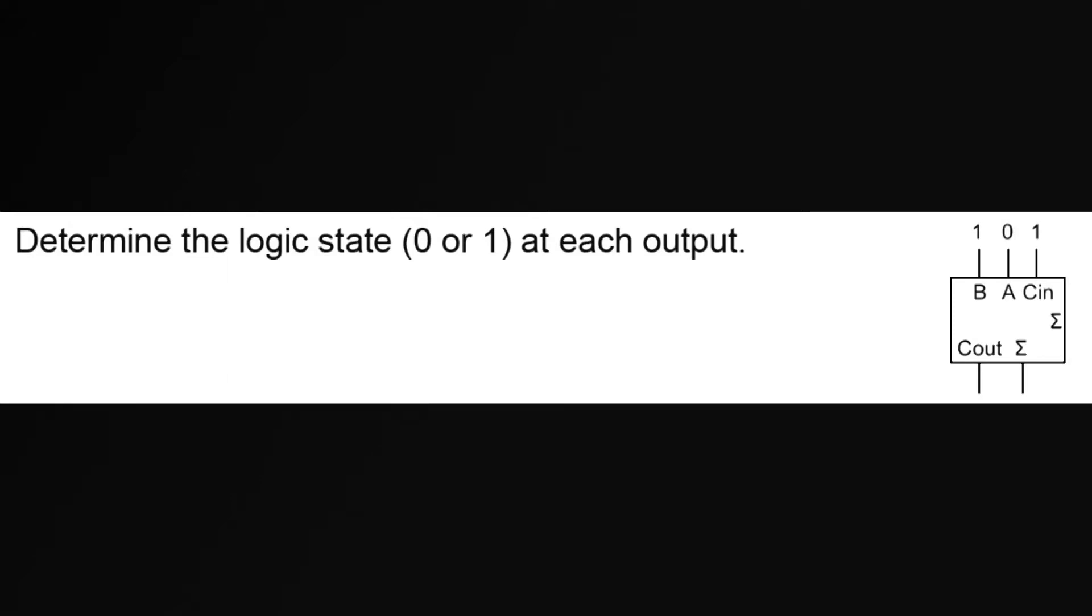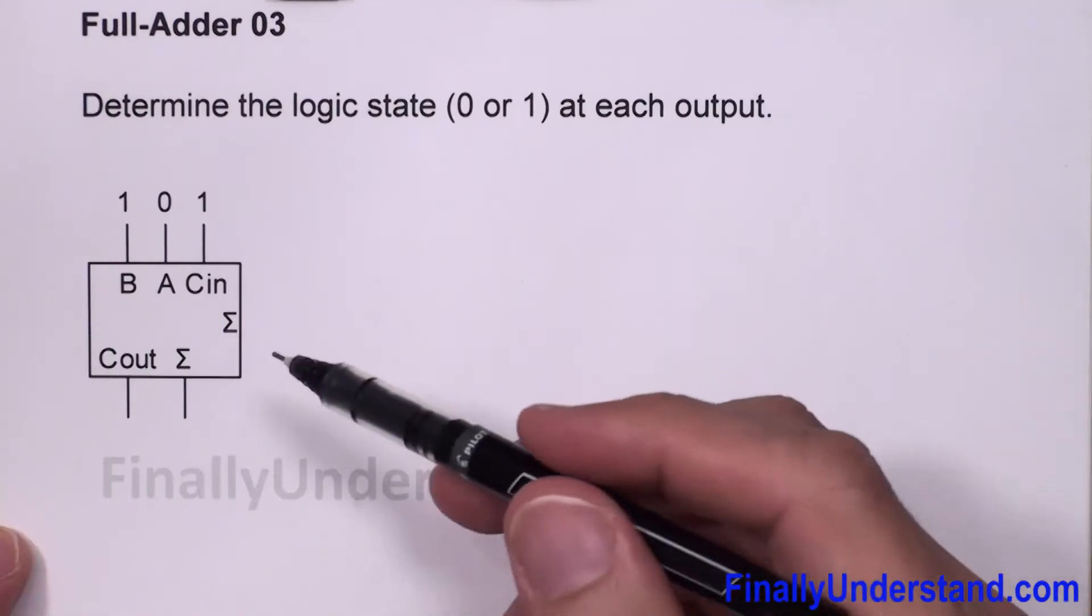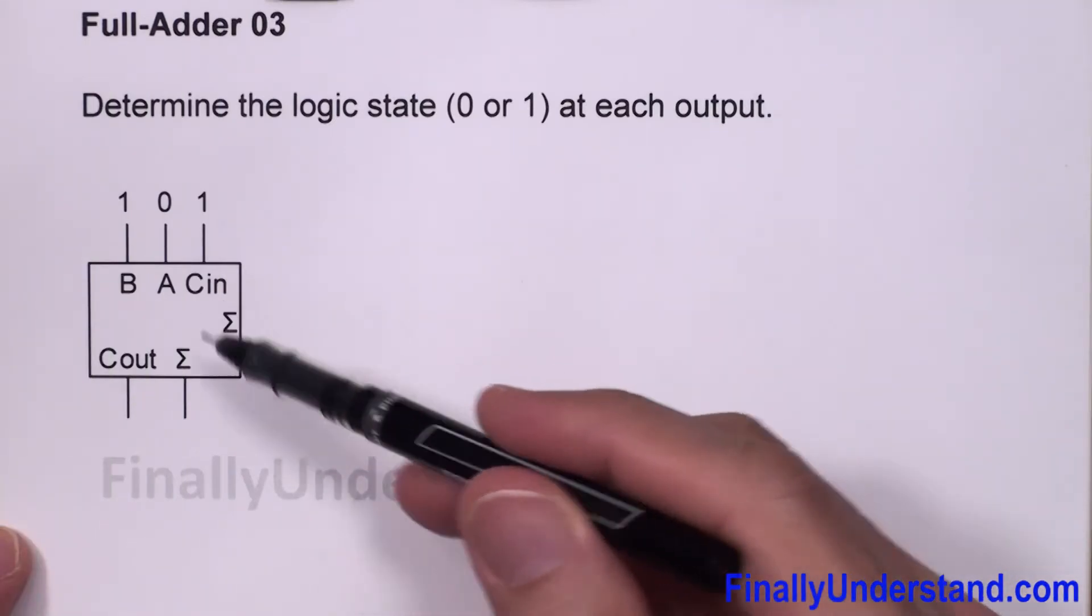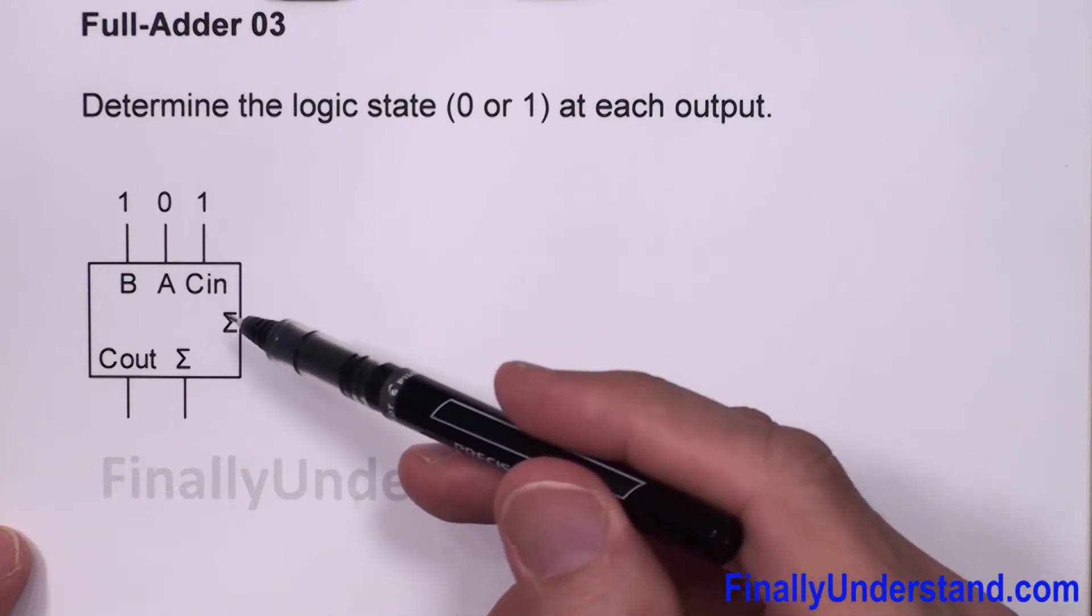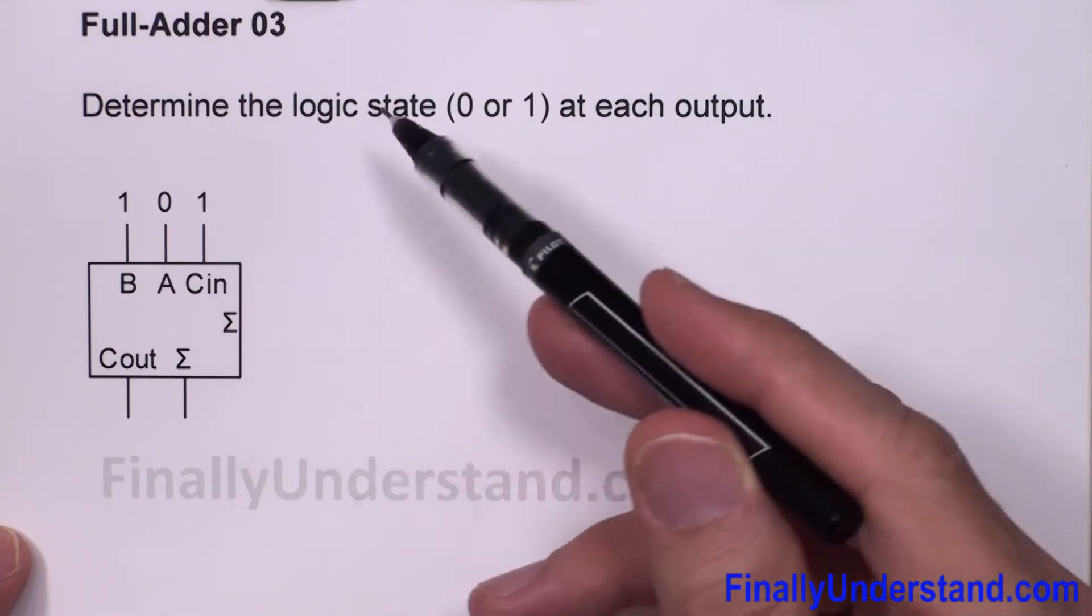Let's take a look at this example. This time we are going to use the block diagram of the full adder. Don't forget that inside of this diagram we have the circuit which we analyzed in the previous problem.